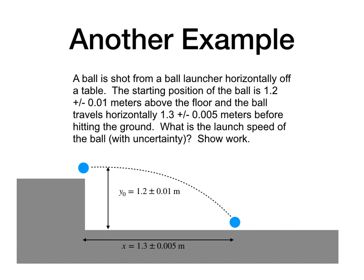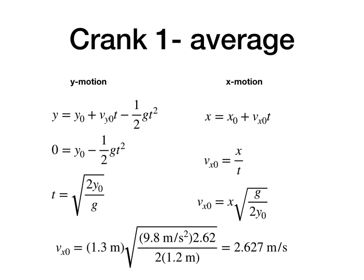So let's do another example. This is one from class I gave. So, a ball is shot from a launcher horizontally off the table. So, it's shot horizontally. And I give the starting position of 1.2 plus or minus 0.01 meters above the floor. And then it travels 1.3 plus or minus 0.005 meters. So, what's the launch velocity? With uncertainty. So, the step one, crank one, find the average. In this case, I just, I ignore the uncertainty. It doesn't matter.